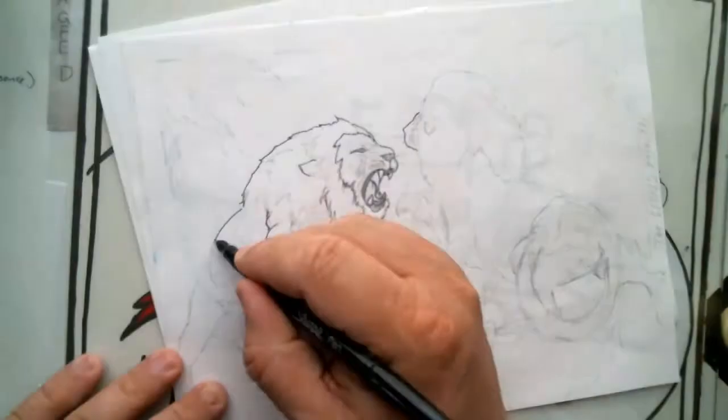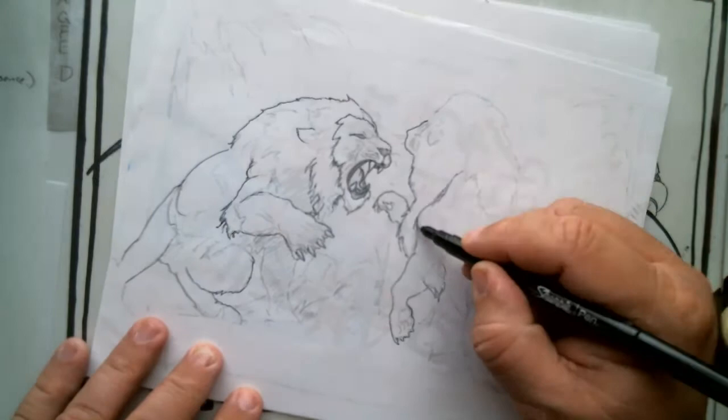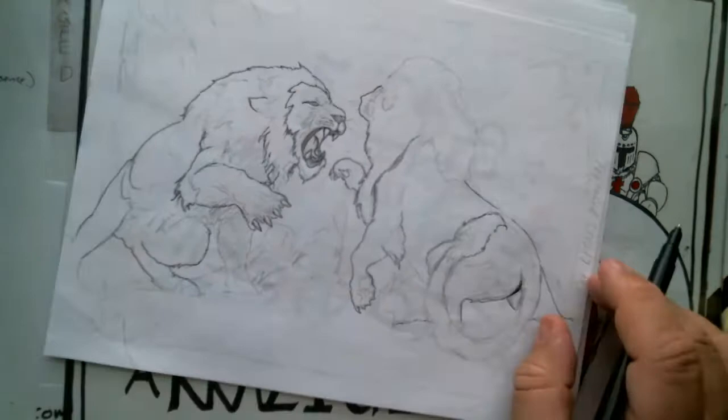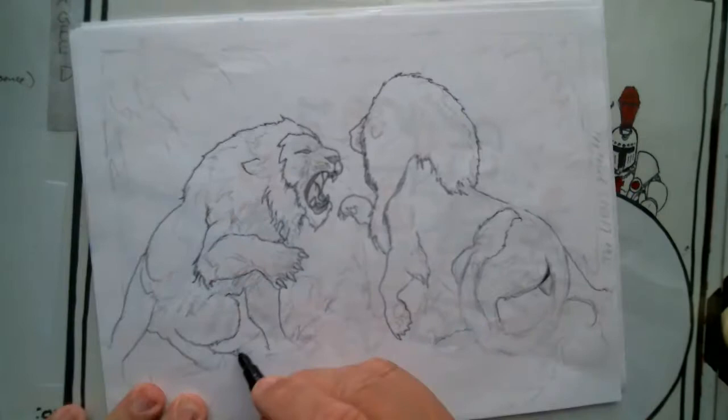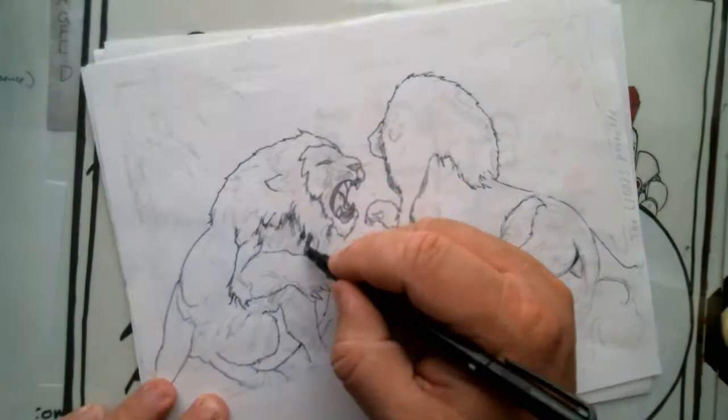Hey everybody, welcome back to another amazing video here on I'm Kind of Sketchy on YouTube. This video is the speed drawing of a fight between two lions, inspired by that amazing photographer Ingo Gerlach who has had his stuff circulating across social media.